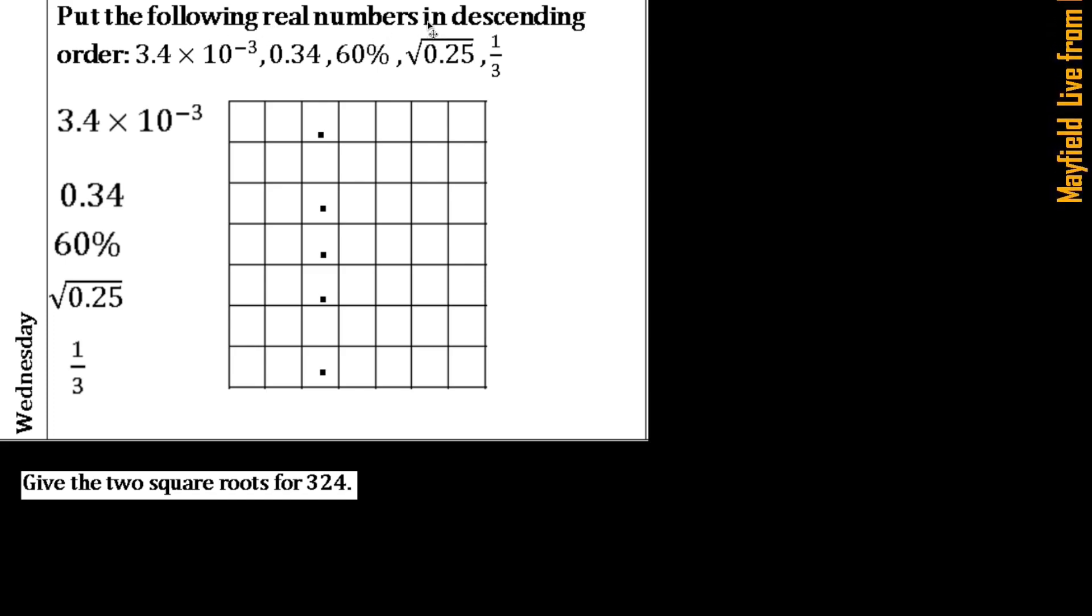It says put the following real numbers in descending order. Remember that descending order means going from the largest or the greatest to the least - we're going down that staircase. The values you have are 3.4 × 10^-3, and you want to first have those decimal points.